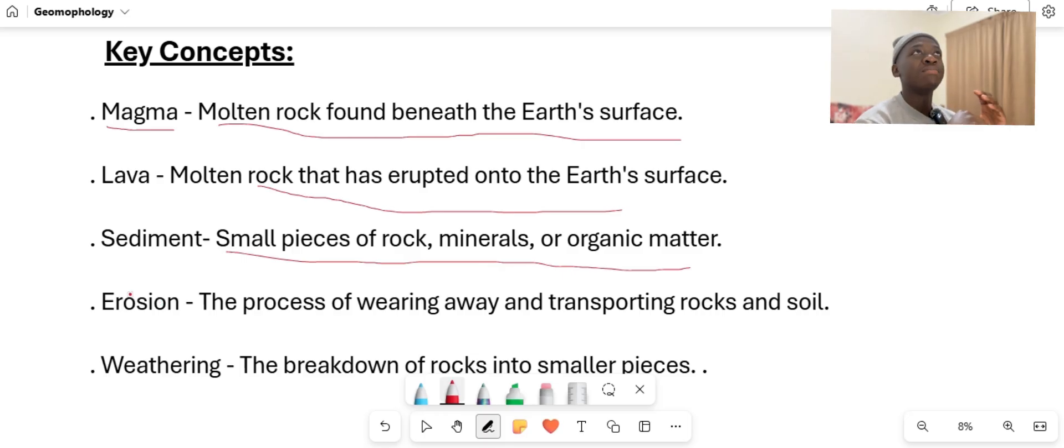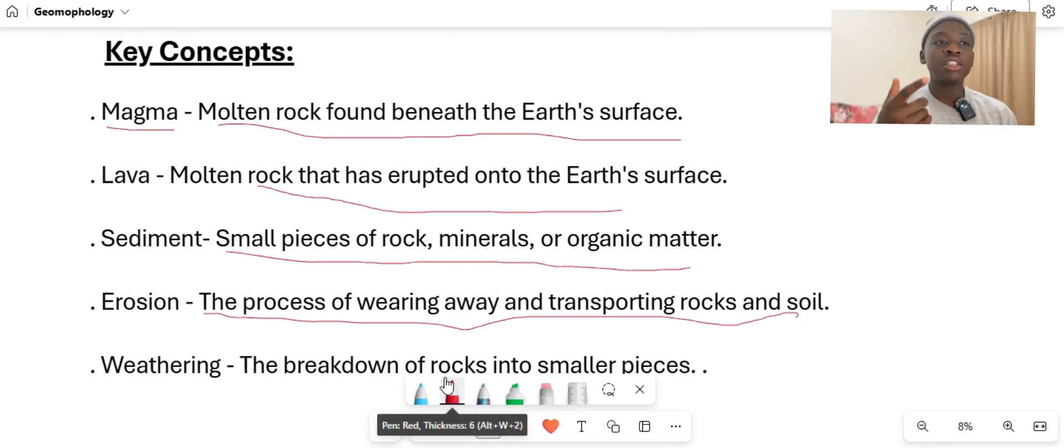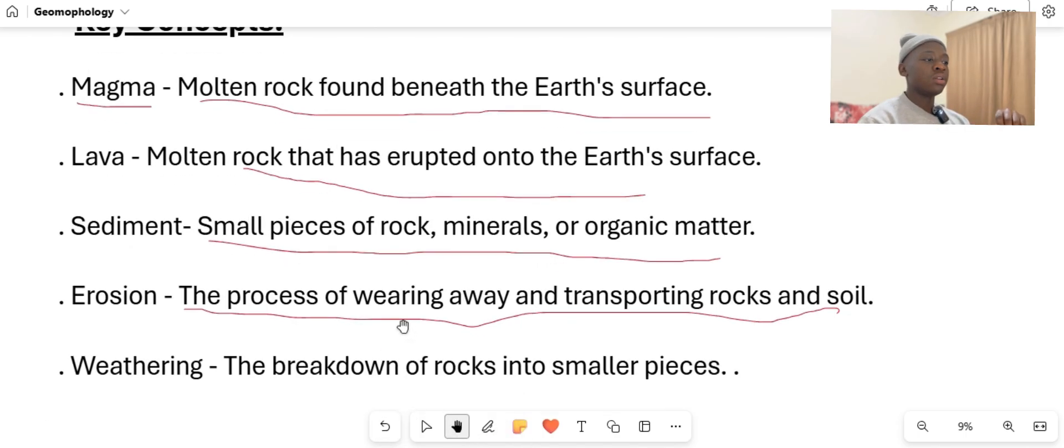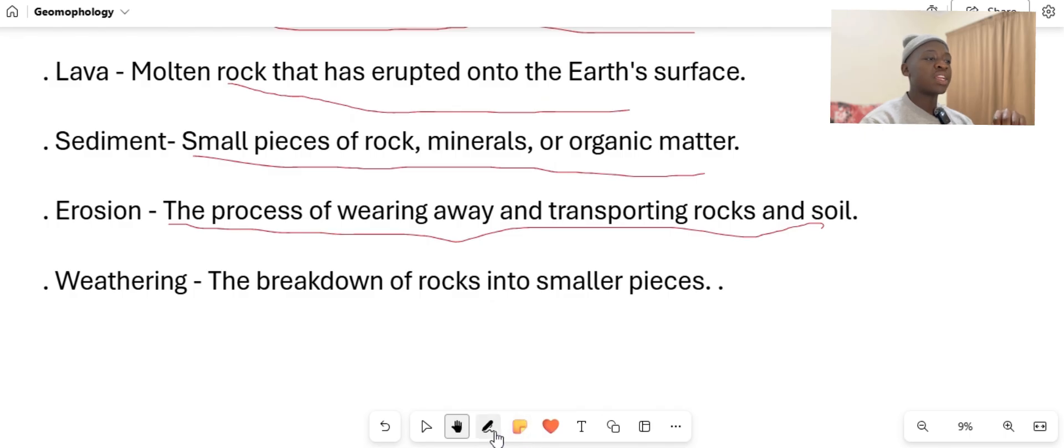Erosion, this one is important, please know this definition of erosion because in many examinations or tests they might want to ask you this question. So erosion is the process of wearing away and transporting rocks and soils. According to your ATP or according to your teacher, there can be a different meaning of erosion. Please stick to what your teacher has given you so that you might get full marks on your examination.